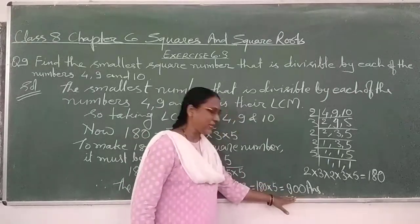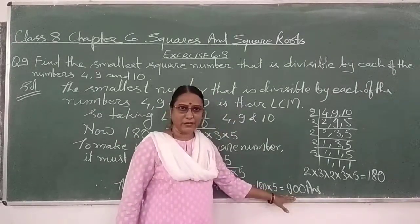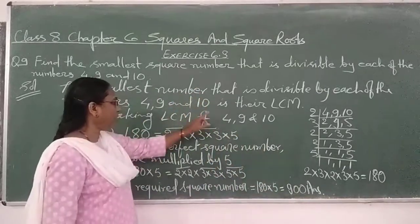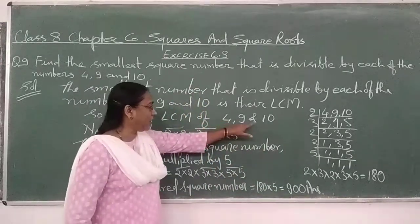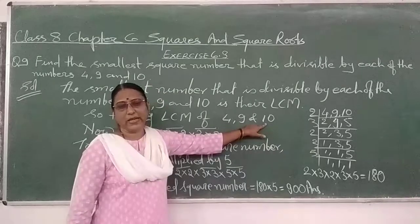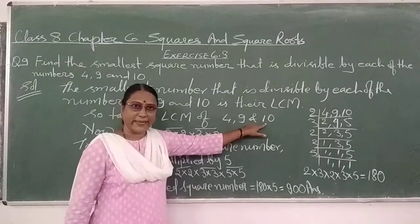To 900 aisa square number hai, smallest square number hai, joh hi 4, 9, or 10 se completely divisible hai.